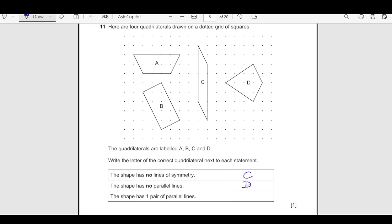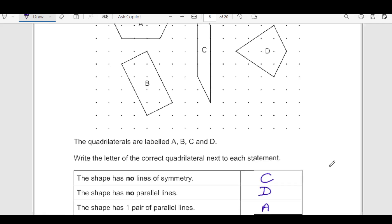The shape has one pair of parallel lines. One pair of parallel line is in A. B has two pair of parallel lines. So we will just write down A over here with the one parallel line.